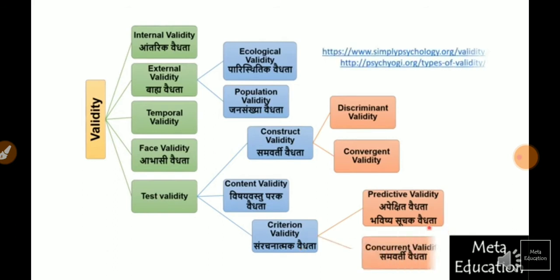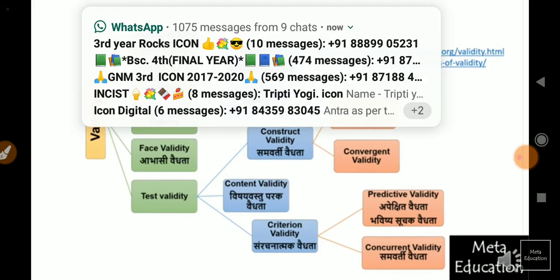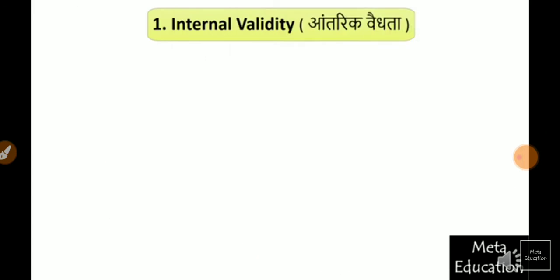Two types of criterion validation are predictive and concurrent validation. We have given all the types of validation and provided information from books. These links will be found in the description below. If you want more information, you can learn from them. First is internal validity, which is also called internal validity in local terminology.